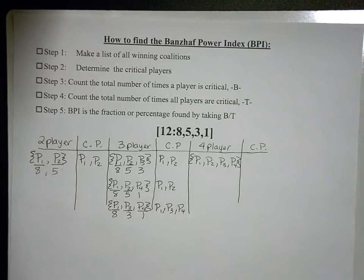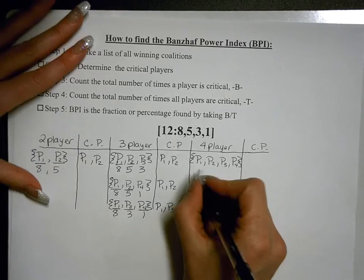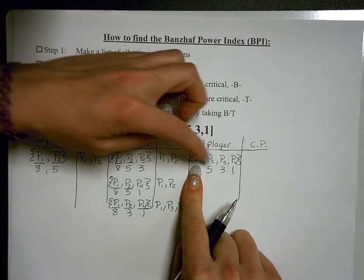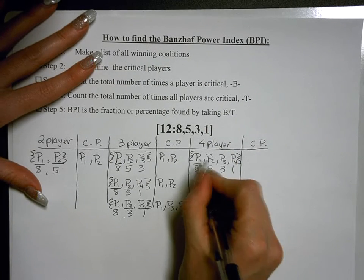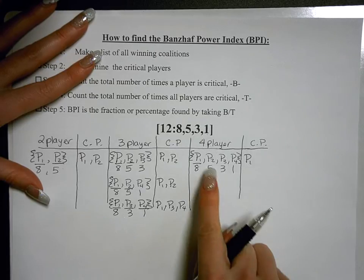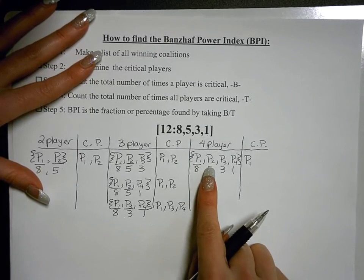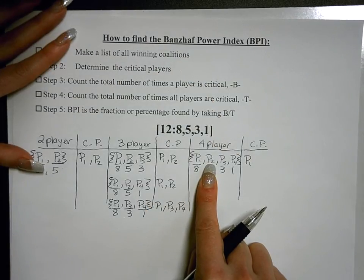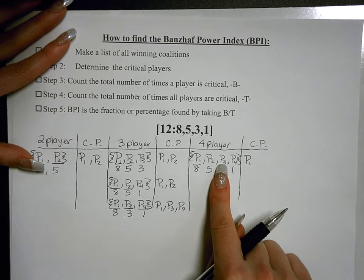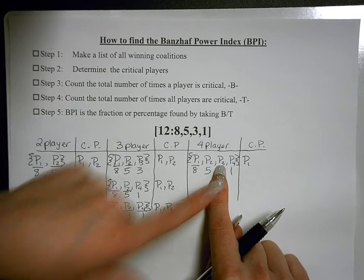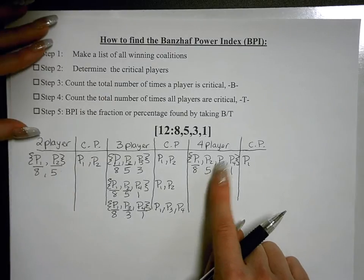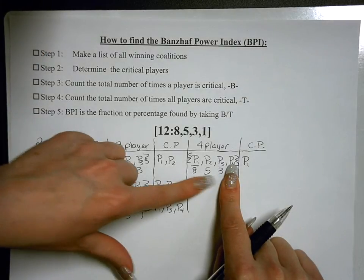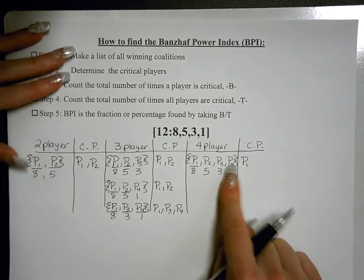On to the four-player coalition: eight, five, three, one. Cover up player one's eight votes: five plus three plus one is nine, not enough — player one is critical. Cover up player two's five votes: eight plus three plus one is twelve, enough to pass — player two is not critical. Cover up player three's three votes: eight plus five plus one is fourteen, enough — player three is not critical. Cover up player four's one vote: eight plus five plus three is sixteen, enough — player four is not critical.